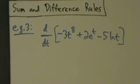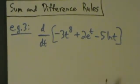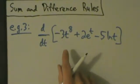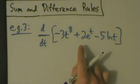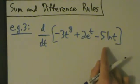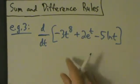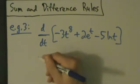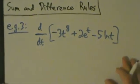All right, let's go ahead and do another example with sum and difference rules. So here we have d/dt of -3t^8 + 2e^t - 5ln(t). So just like with example one, we'll go through this one in a lot of detail just so that you'll have a thorough understanding of what's going on.